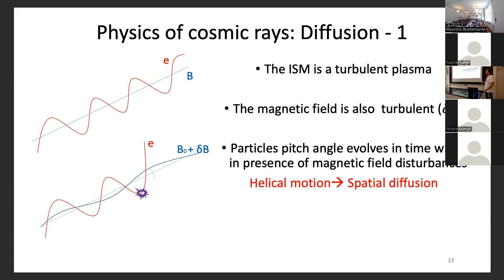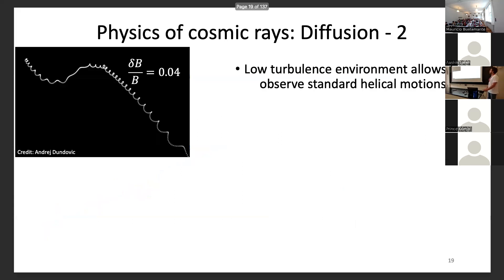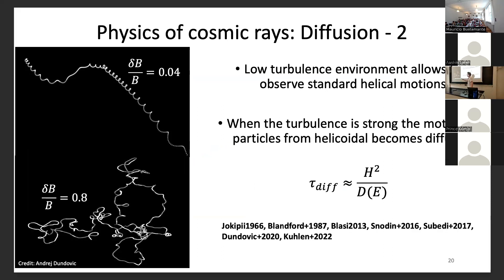At macroscopic scale, this microscopic phenomenon manifests as spatial diffusion: a cosmic ray moving along a magnetic field line will eventually start diffusing and might come back on the same line. We parametrize this with the diffusion coefficient, with units of length squared per time. You can imagine this like a drop of ink spreading in water. From helicoidal motion in low turbulence we get to quasi-Brownian motion in highly turbulent fields — this is why we talk in terms of diffusion.